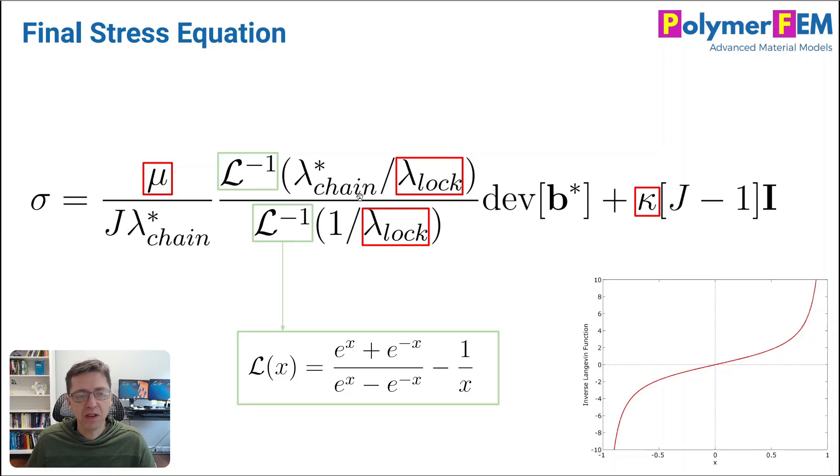And then it has this weird function, L minus one. This is a function that's called the inverse Langevin function. And it can't be expressed in elementary functions. But the traditional Langevin function is given by this. The inverse is just the inverse of this. You need to solve that inverse in some way.